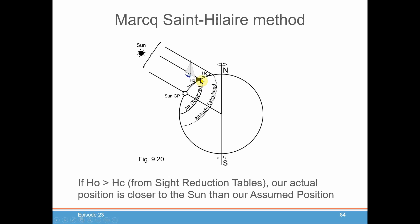So once we know the direction to the sun, we need to know how far away we are. So using our HO, we know exactly how far away we are from the sun. We know from the HC that we calculated where the assumed position is of the sun. So what we're going to do is just compare those two numbers, and that's going to tell us how far away we are from that assumed position. If our HO from our sextant is greater than the HC from the sight reduction tables, which we calculated from our assumed position, then our actual position must be closer to the sun than our assumed position, and we'll mark that on our chart closer to the sun.